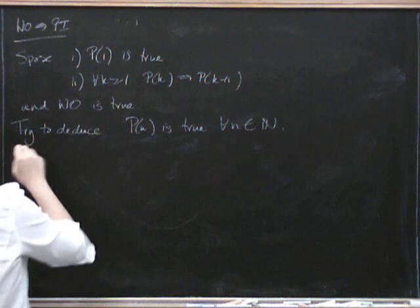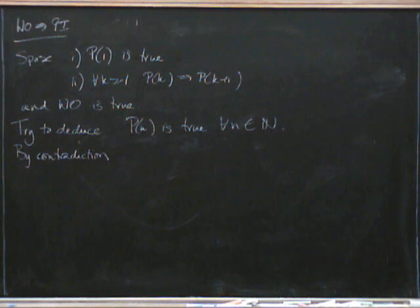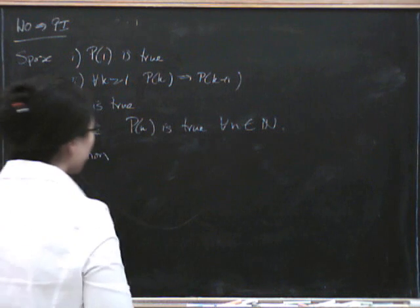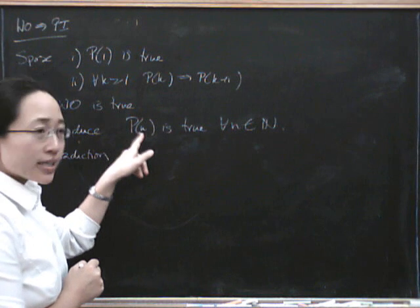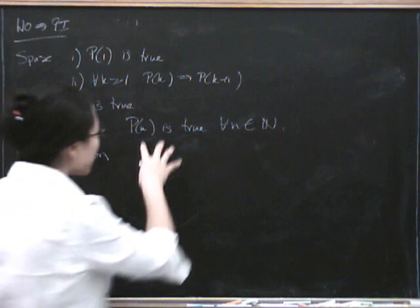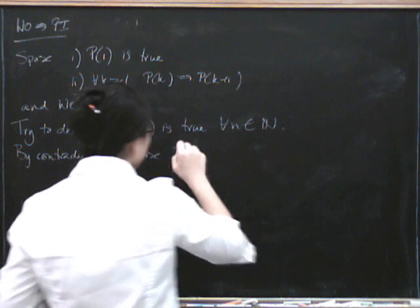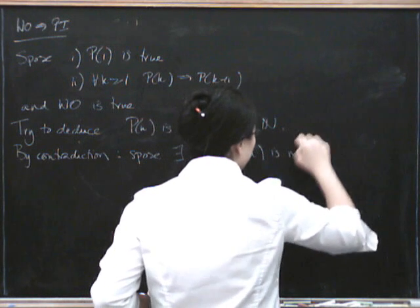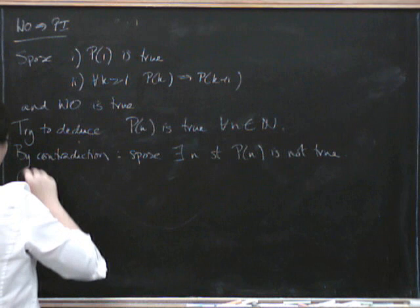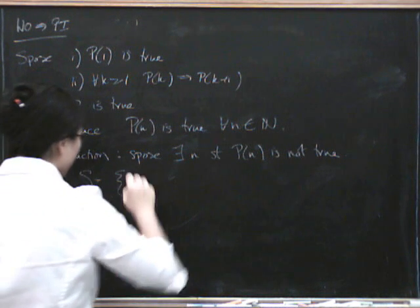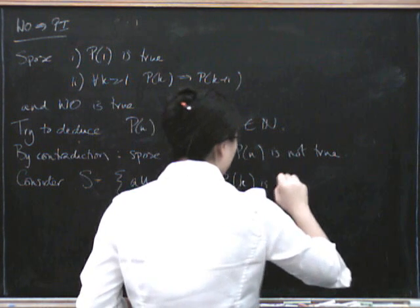We're going to do it by contradiction. Suppose there exists some n such that p of n is not true. Now consider the set S equals the set of all k in the natural numbers such that p of k is not true.